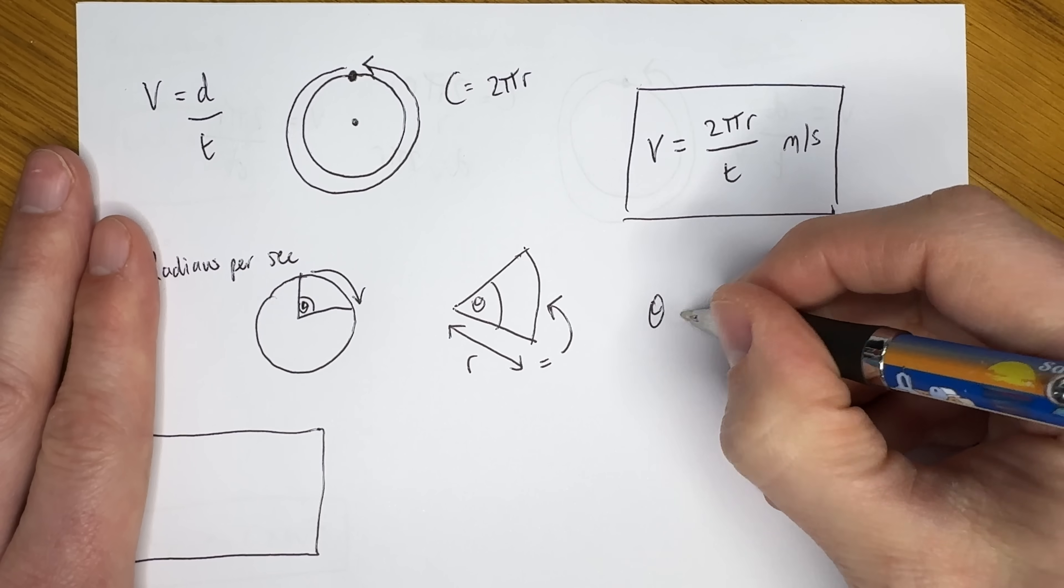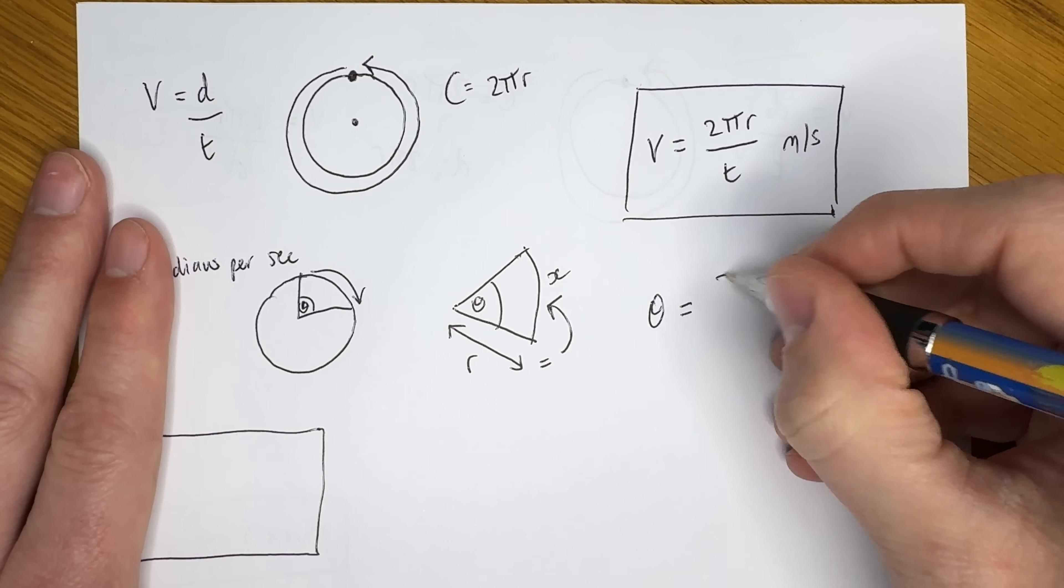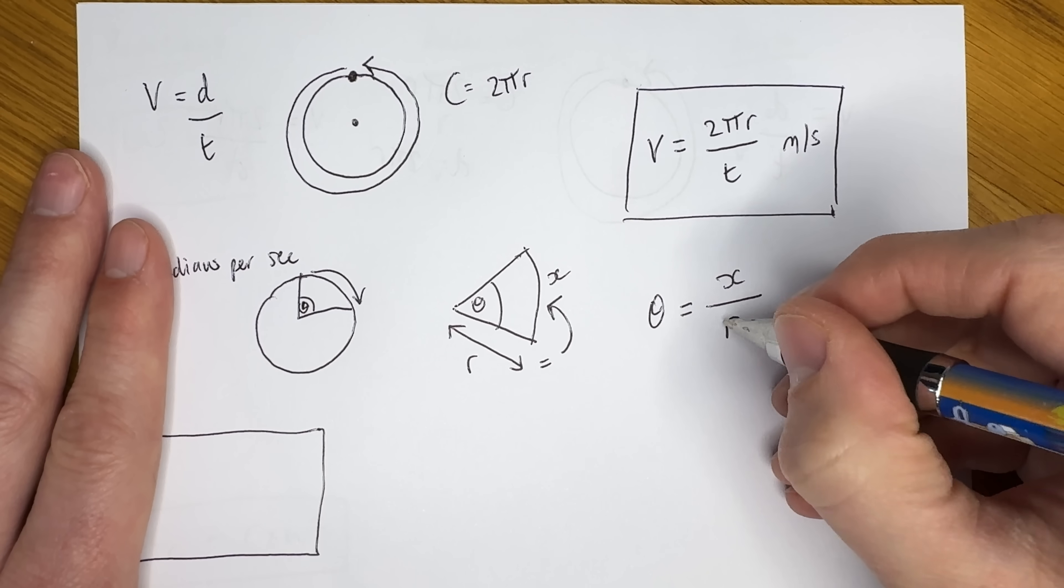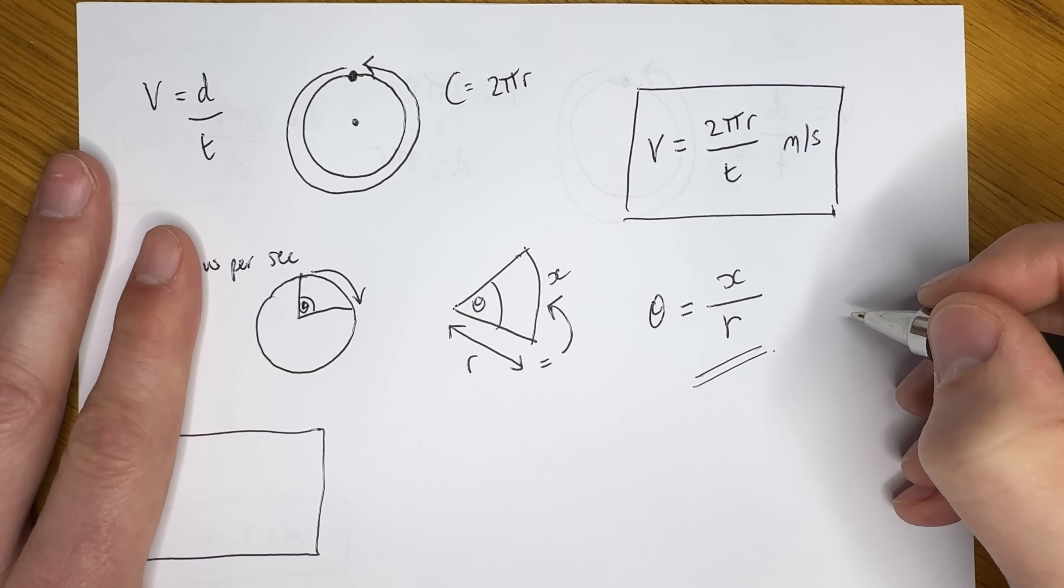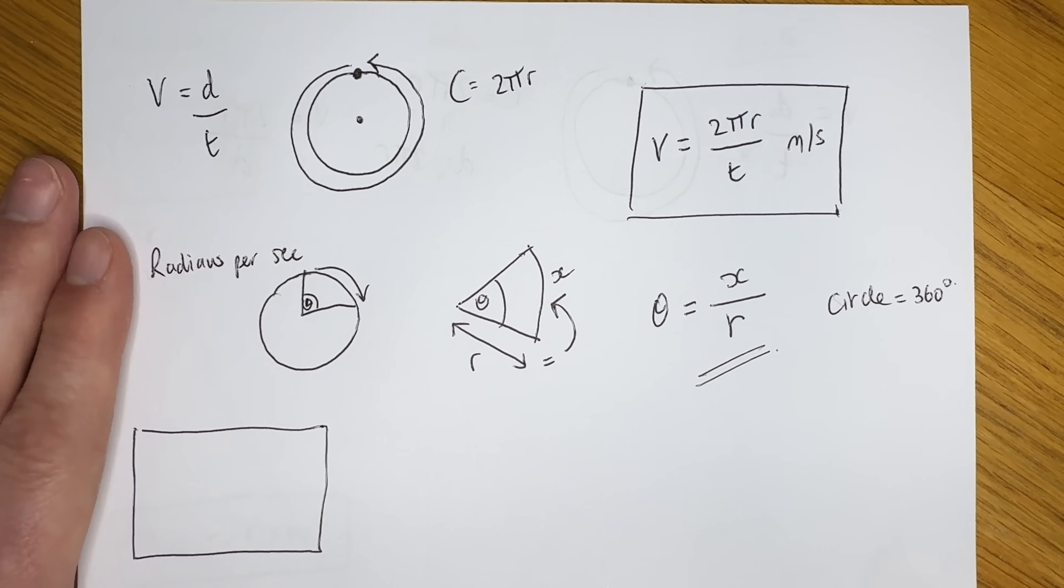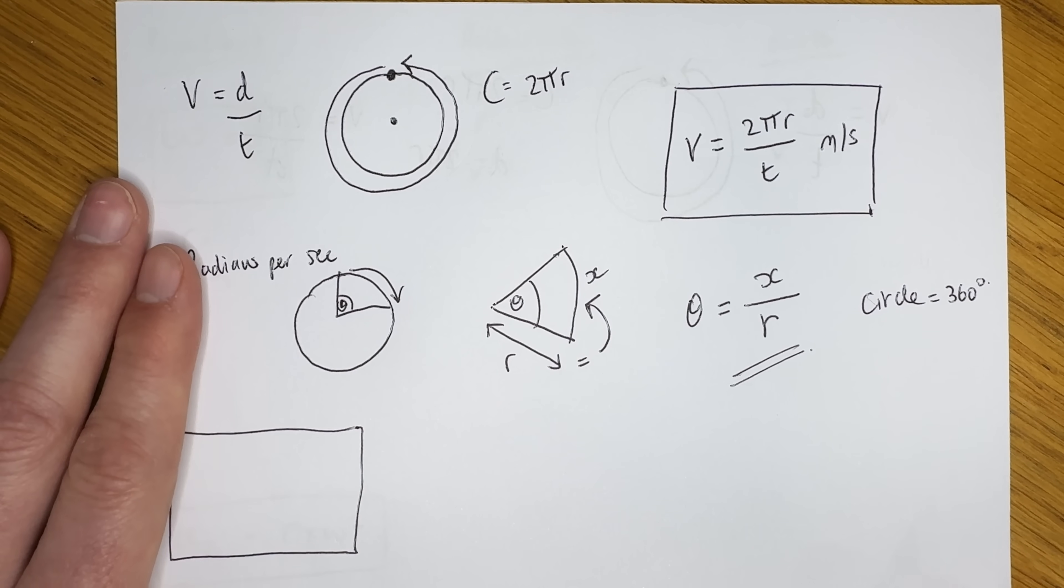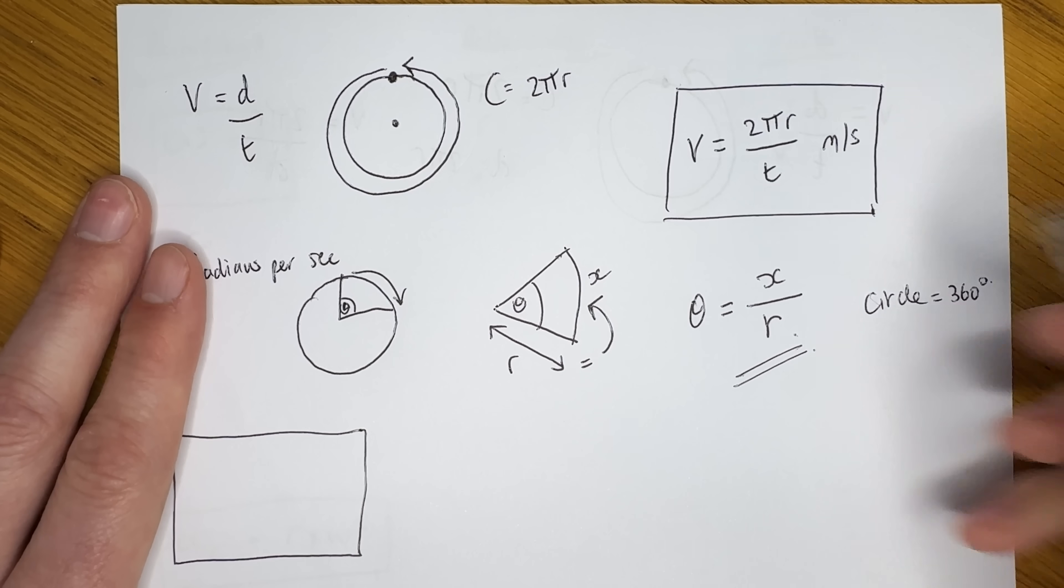So radians are the standard unit to measure an angle, and one radian is the angle created at the centre of a circle where the radius is equal to the arc length here. So the angle in radians can be figured out as the distance of the arc, let's call this x, divided by the radius. Right, now how many radians are there then in a full circle? Well,